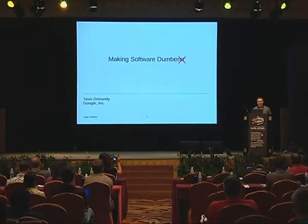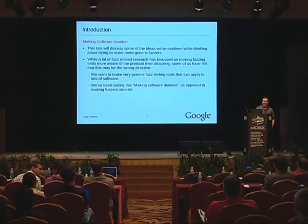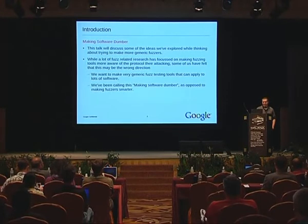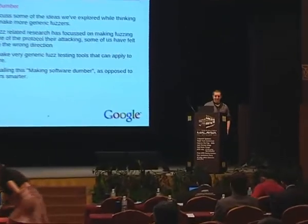I'm from Google, and this is my talk. I'm going to be talking about some ideas that we've been using and exploring at Google to do with fuzzing. A lot of research is being named fuzzing, generally towards making smarter fuzzers with a better understanding of protocol and states a program can get into. But we consider this might be the wrong direction, and that more research should be put into making software generically less smart — removing the protocol it supports and making it a stream of bytes no different from just reading random data. I've been calling this making software dumber, as opposed to making fuzzers smarter.